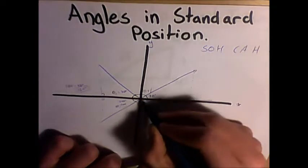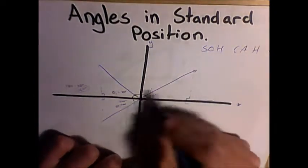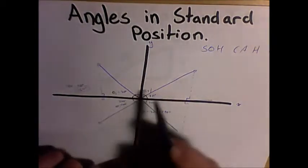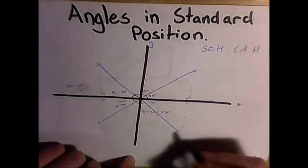The terminal arm can be anywhere, really. It can be here, or we can have a terminal arm here or here, and it's the part of the triangle that rotates around to be in either of the four quadrants.